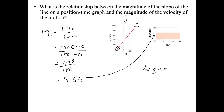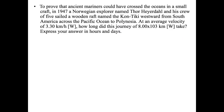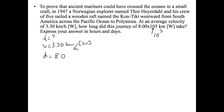In 1947, Norwegian explorer Thor Heyerdahl and his crew of five sailed a wooden raft named the Kon-Tiki westward from South America across the Pacific Ocean to Polynesia at an average velocity of 3.3 kilometers per hour west. How long did this journey of 8.0 times 10 to the 3 kilometers west take? Express your answer in hours and days. We know velocity is 3.30 km/h west and distance is 8.0 times 10 to the 3 kilometers.